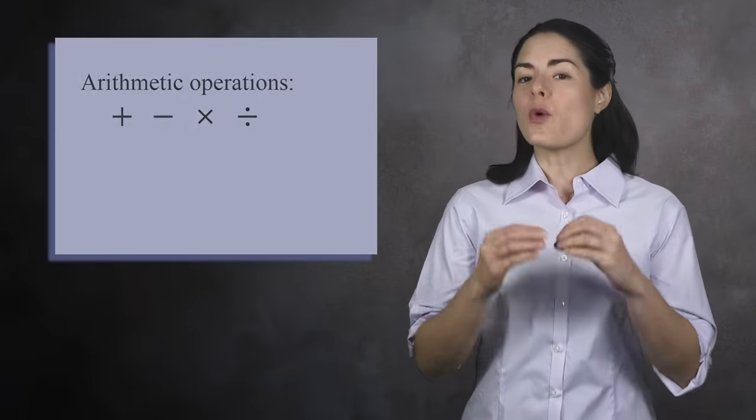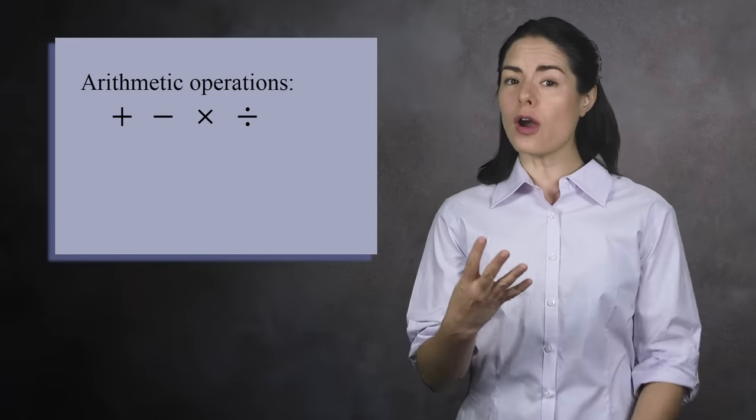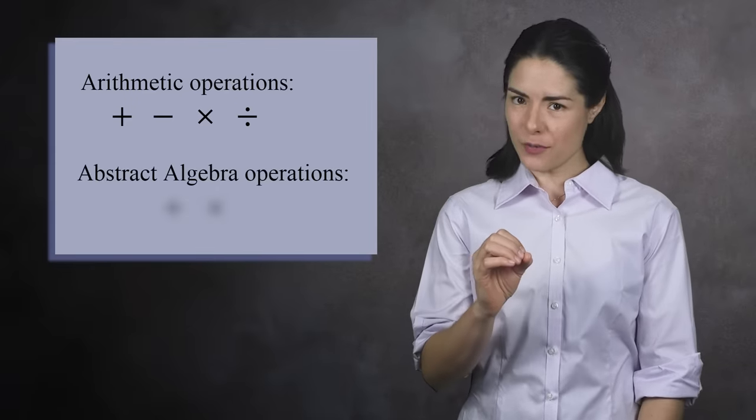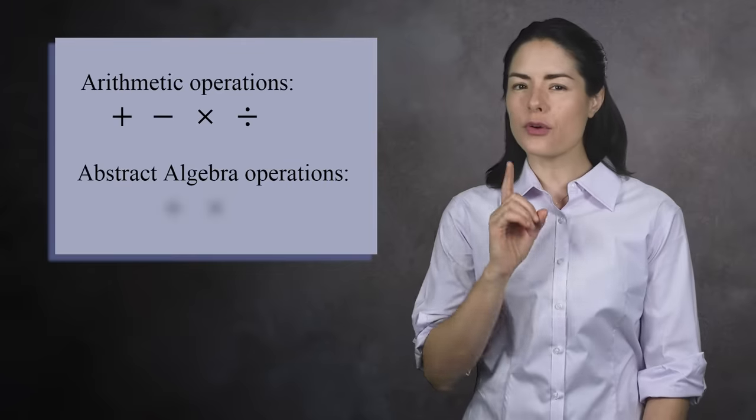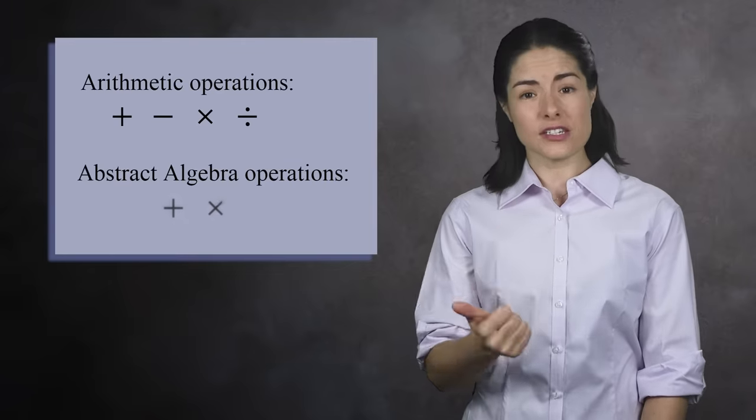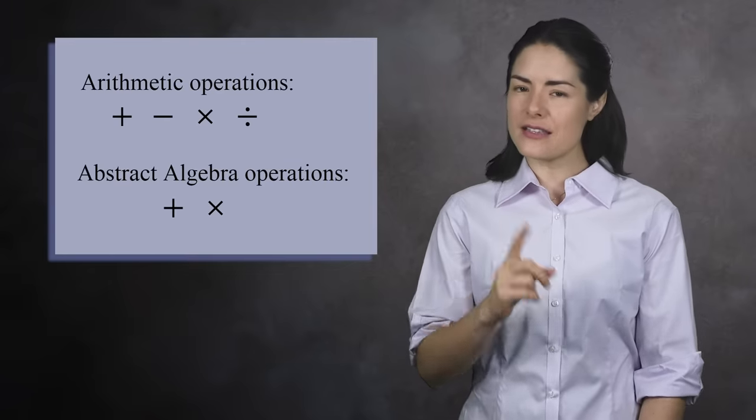These examples show that depending on the set, you'll have different operations from arithmetic available to you. And while in arithmetic you learn that there are four operations, in abstract algebra we think about things a little differently. Here there are really only two operations: addition and multiplication. Let's see why.